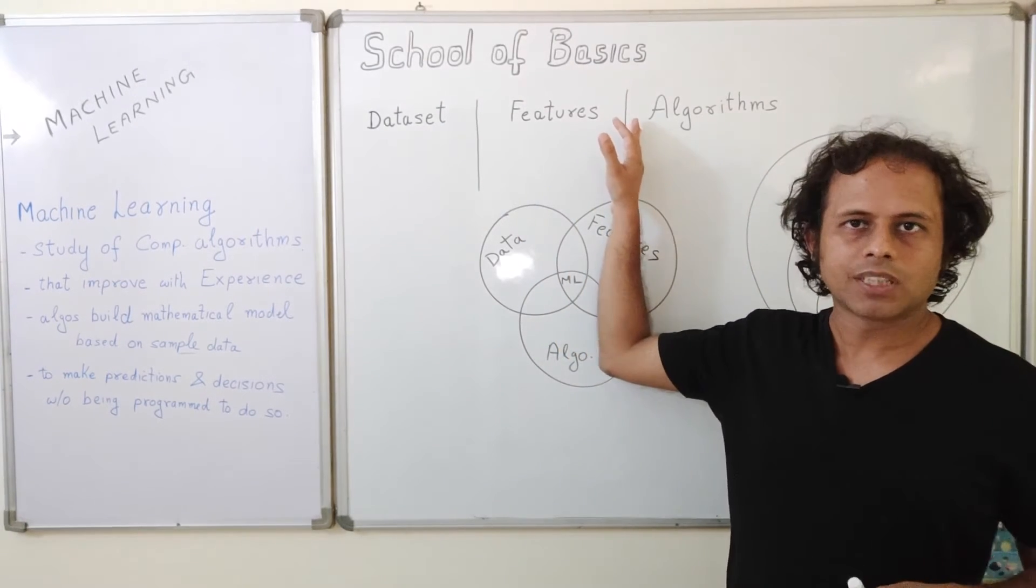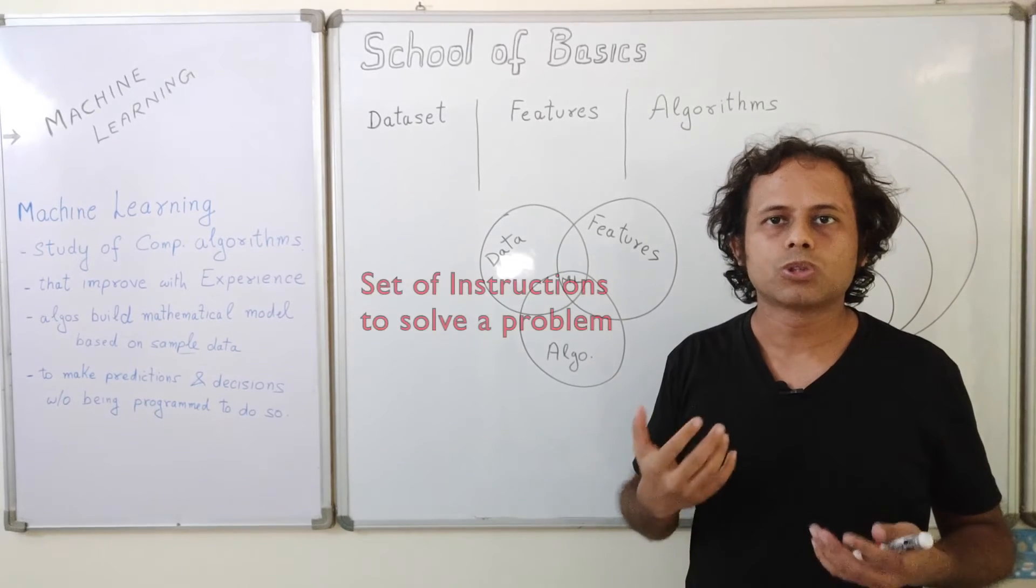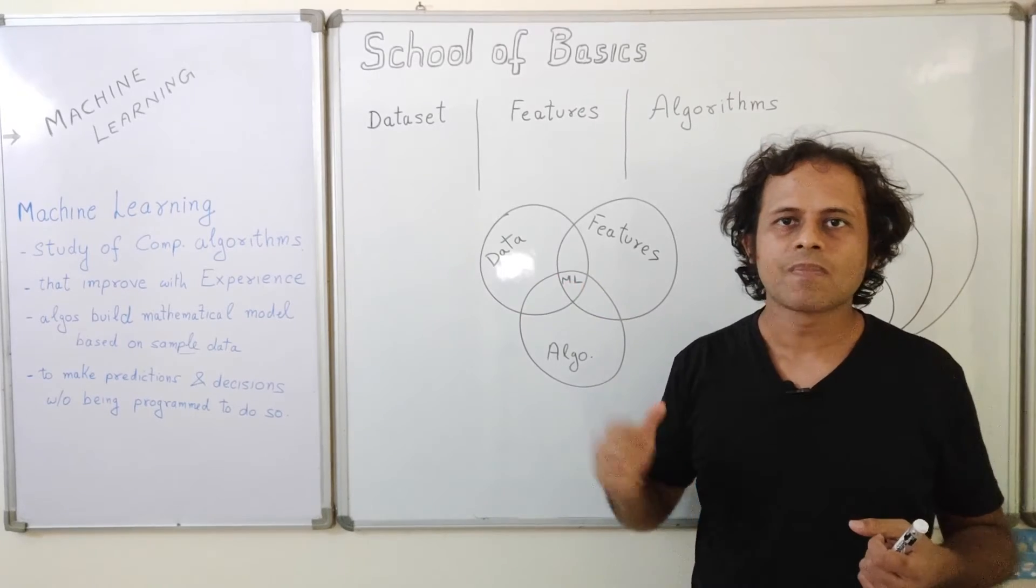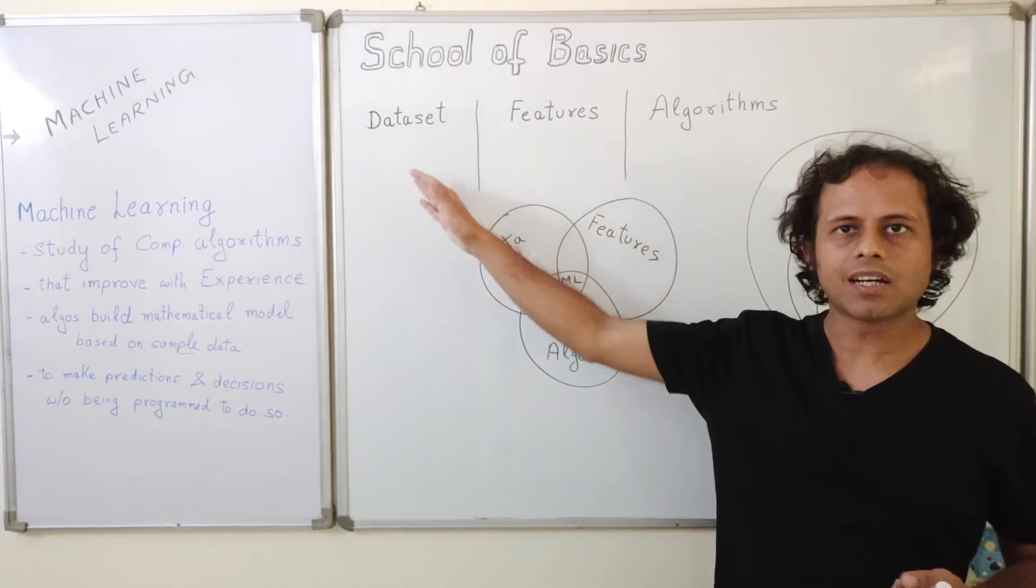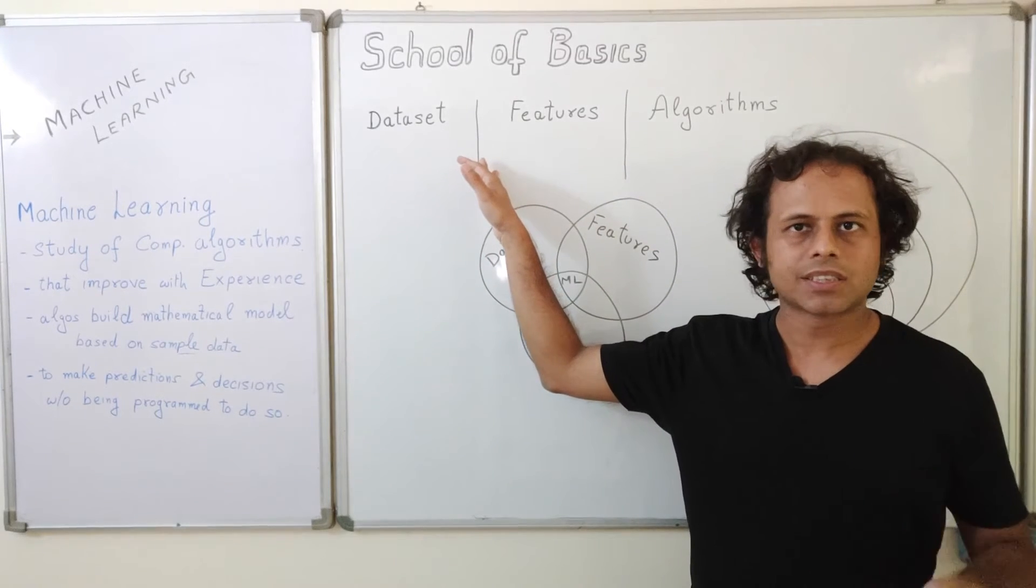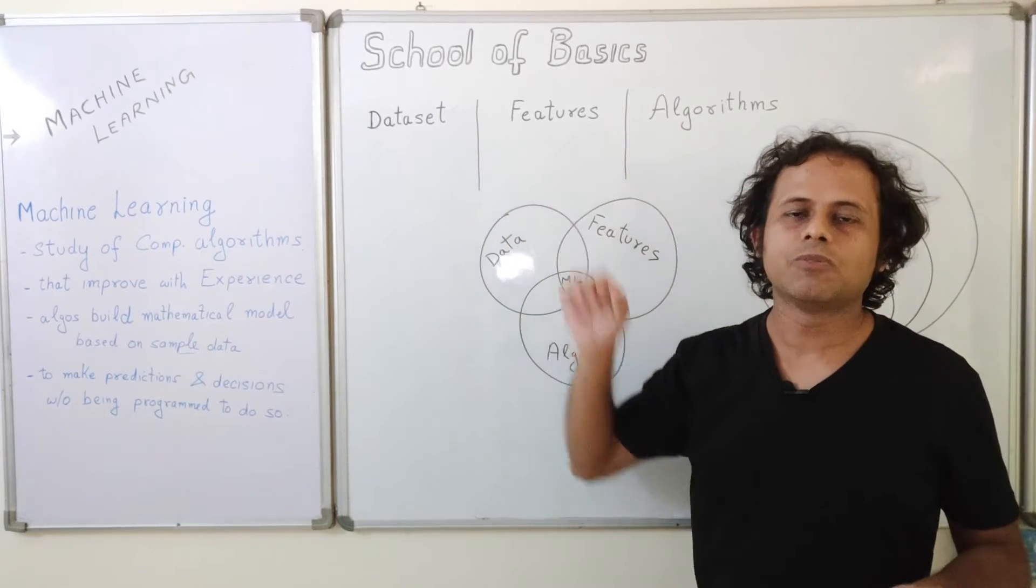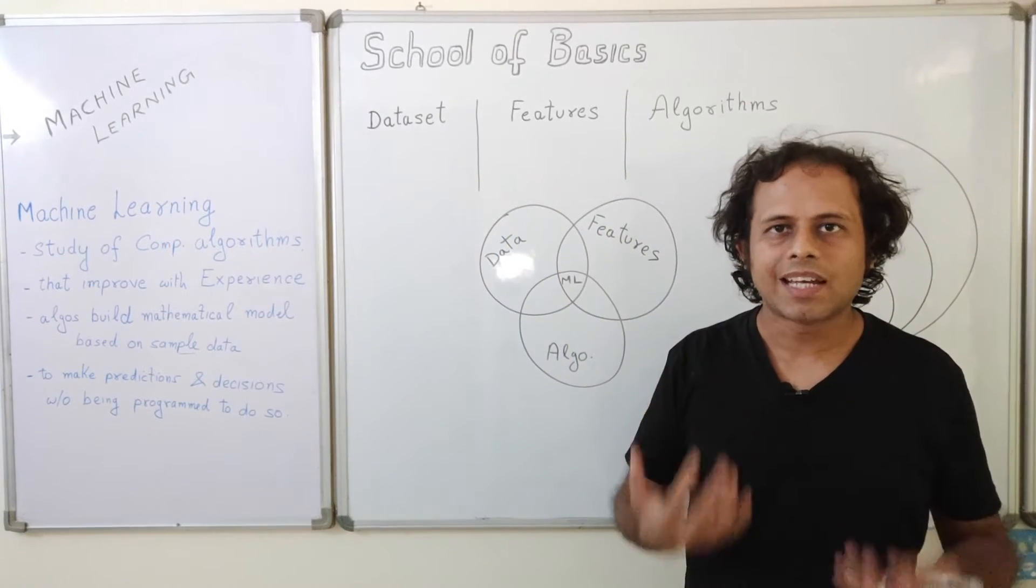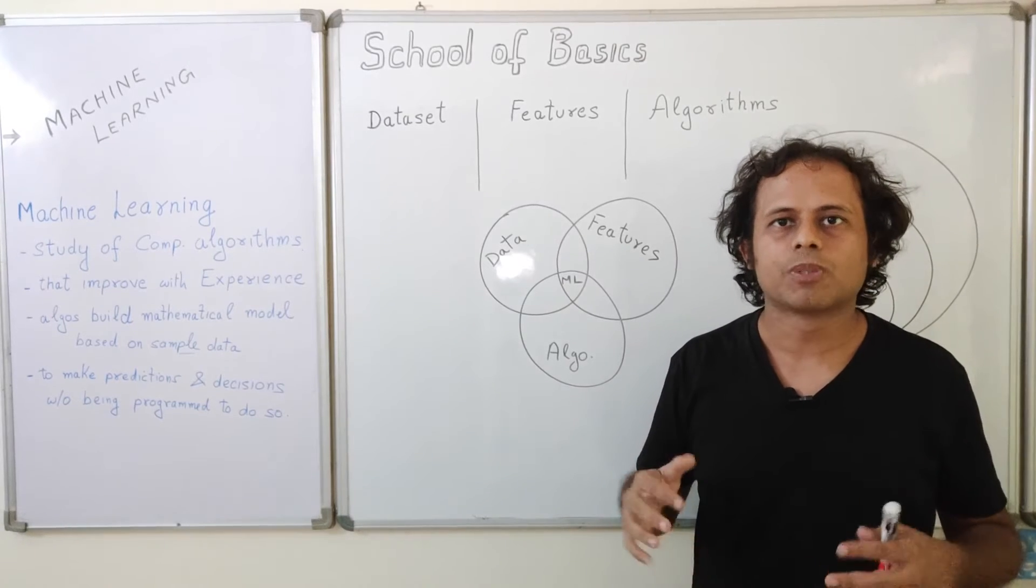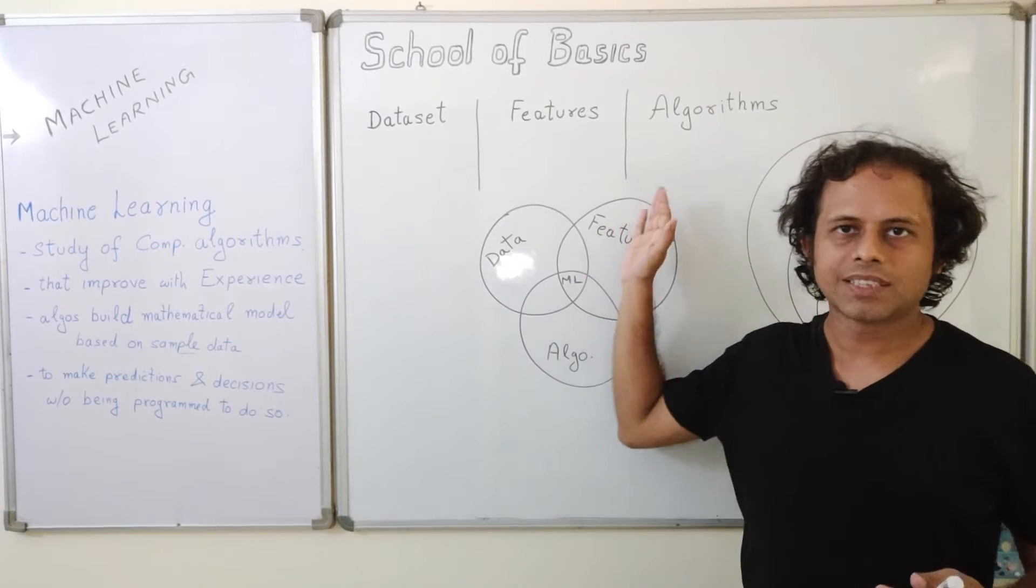And then we have algorithms. Algorithms are a set of instructions to solve a problem. These are sequences of steps or instructions and an algorithm uses features and data, and based on the data we have and the features we have, it runs some steps or sequence of instructions and based on algorithms, we can actually do the calculations and then do predictions and take a decision. So machine can do these calculations, prediction and take decisions based on these algorithms.